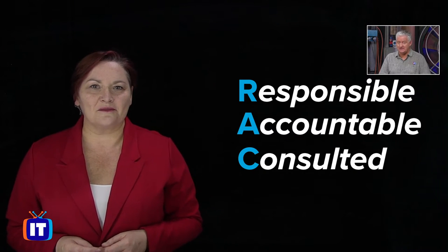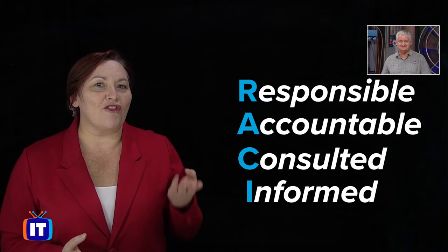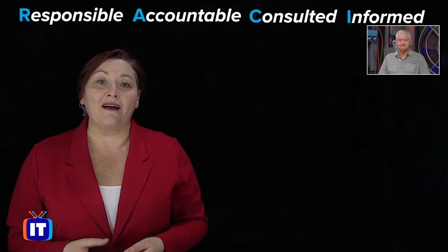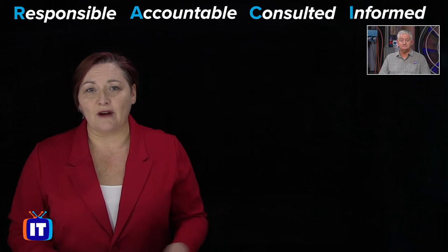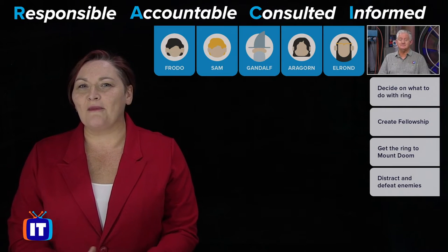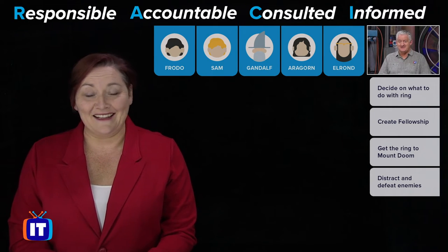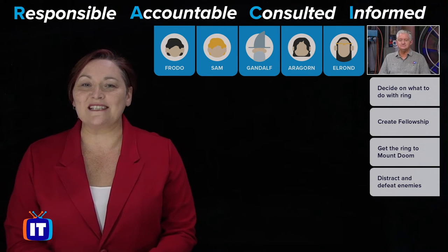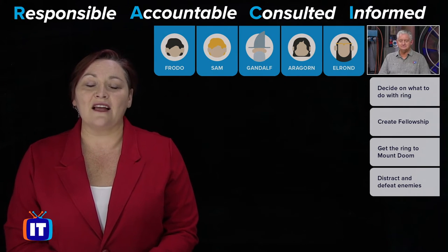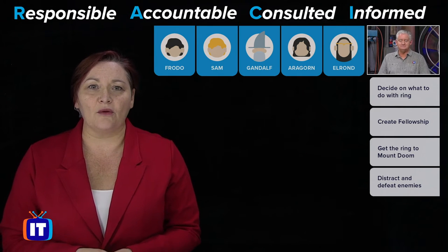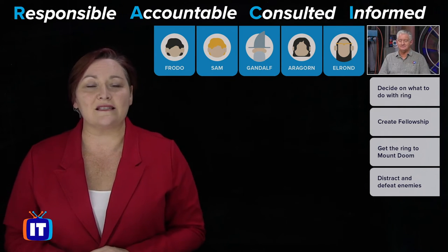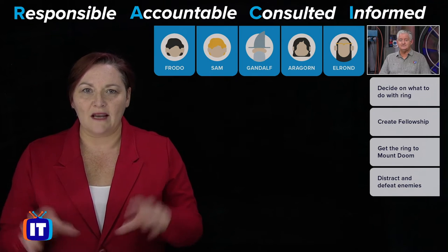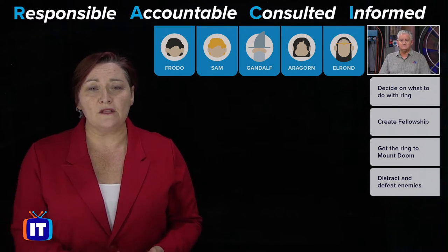Responsible, accountable, consulted, and informed. These are the four different responsibilities that we assign to stakeholders in any given process. What we need to do is bring in a project — how about Lord of the Rings? We're going to assign roles and responsibilities to all the tasks listed here, with our stakeholders listed across the top. They would either be a person, as listed here, or maybe just a role.